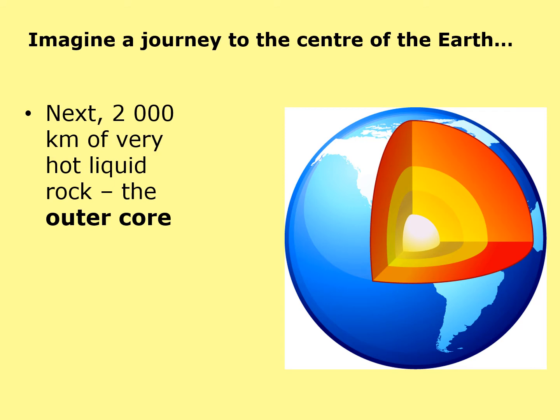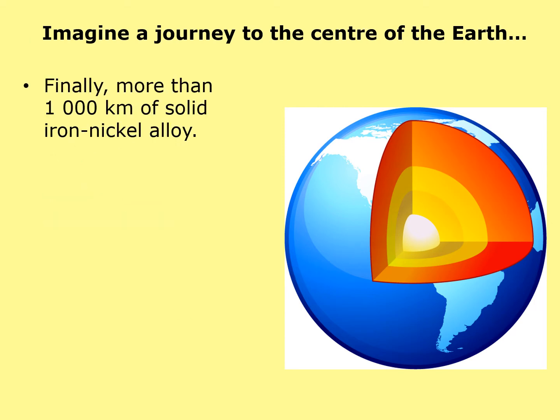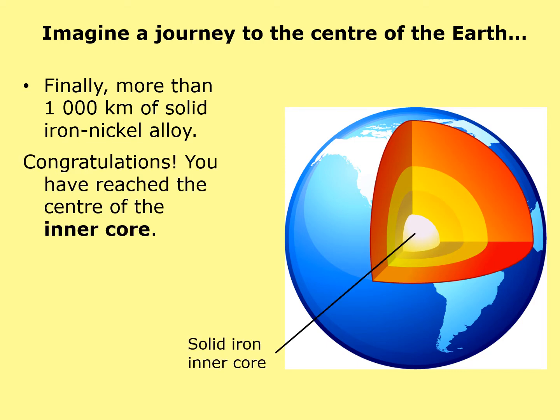The next 2,000 kilometres is very hot liquid rock — shown in yellow in our diagram — and that's the outer core. Because it's a liquid, it can be moving all the time. It also contains some nickel, an element you could find on the periodic table. Then we have the inner core, which is approximately 1,000 kilometres of solid iron-nickel alloy — pretty much the same composition as the outer core, but solid.